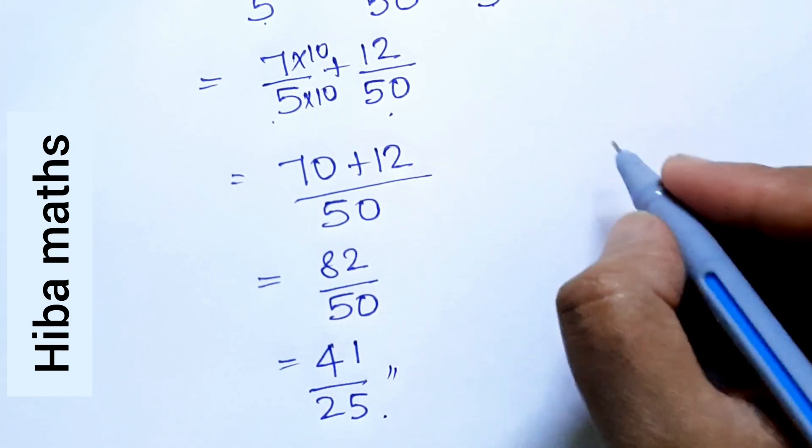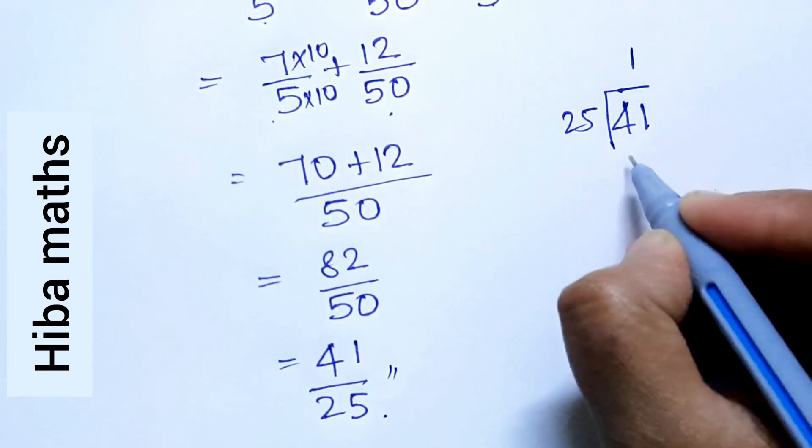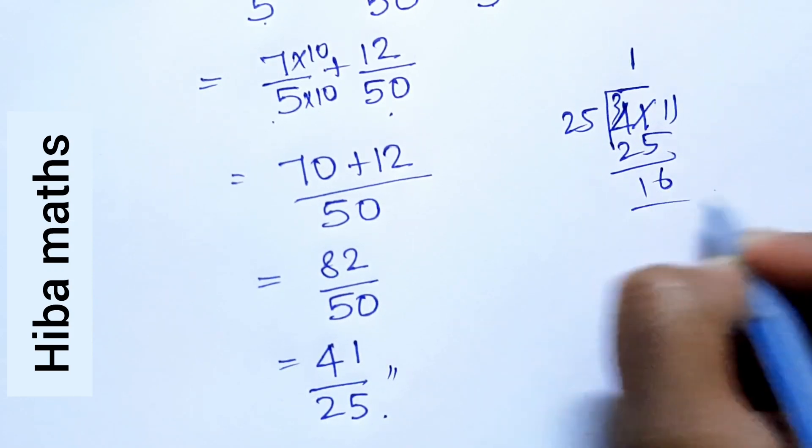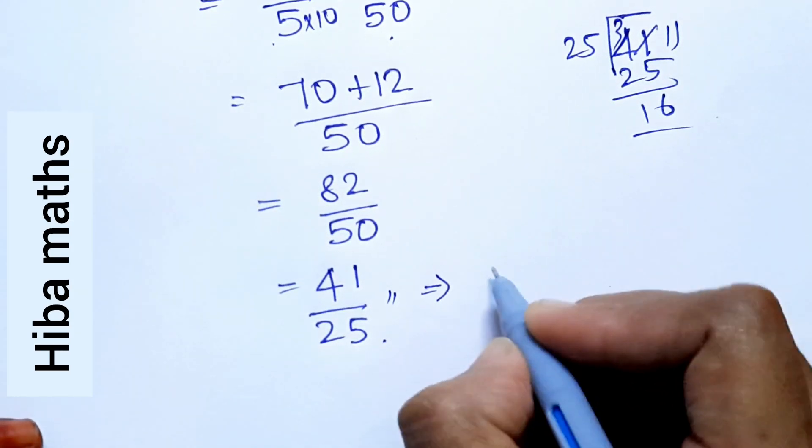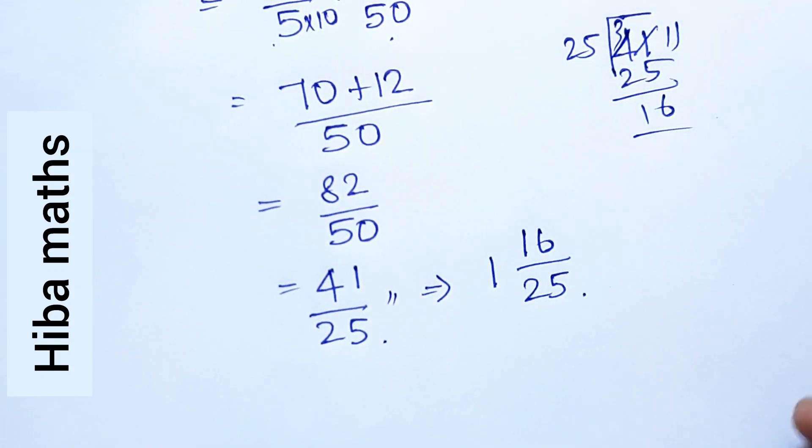And if we simplify this: 41 divided by 25, 1 times 25, 16 remainder, so 6, 1, 16. How do we write this? 1 and 16 by 25. Understand?